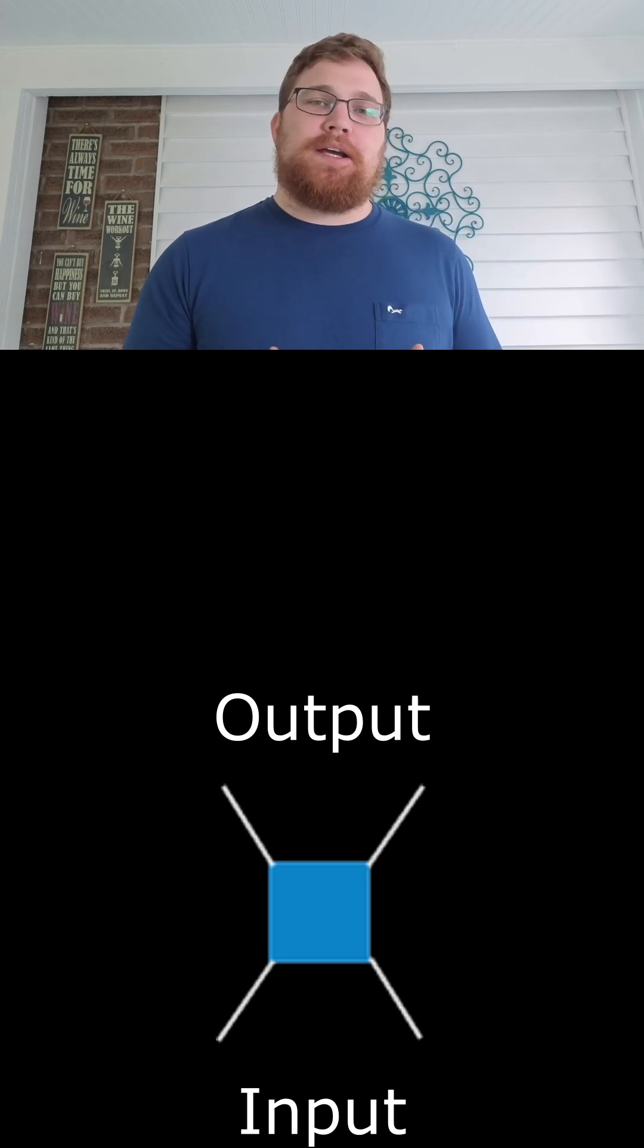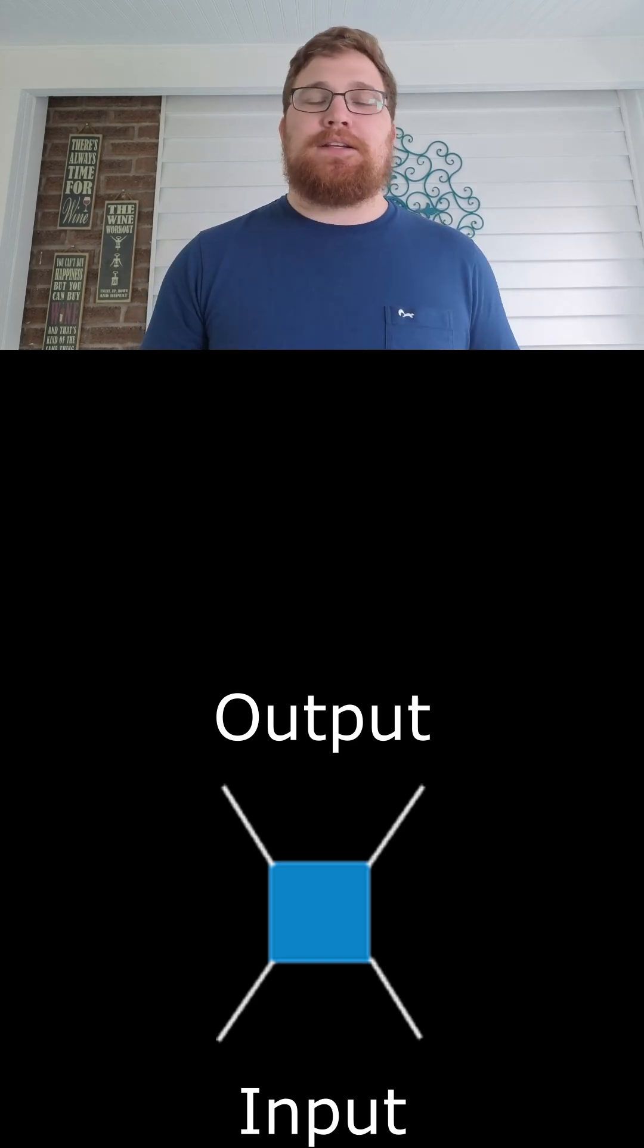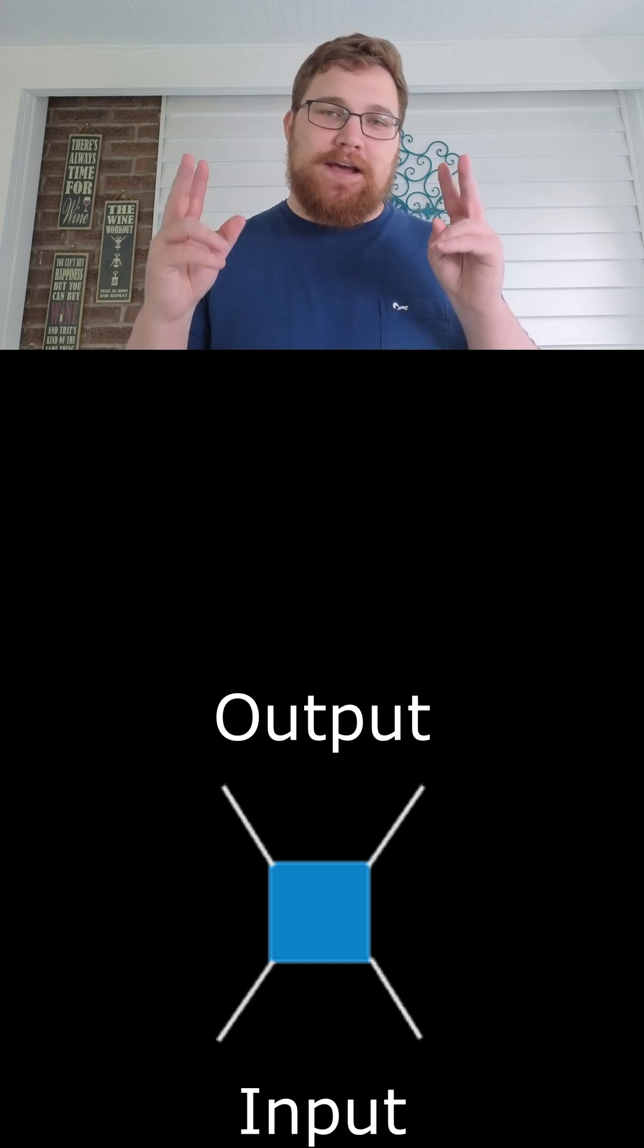You can picture a two-qubit gate as a box. Let's make it blue with two legs coming out of the bottom and two legs coming out of the top. I'm a quantum many-body physicist, so I'm taking the time direction to be upwards.